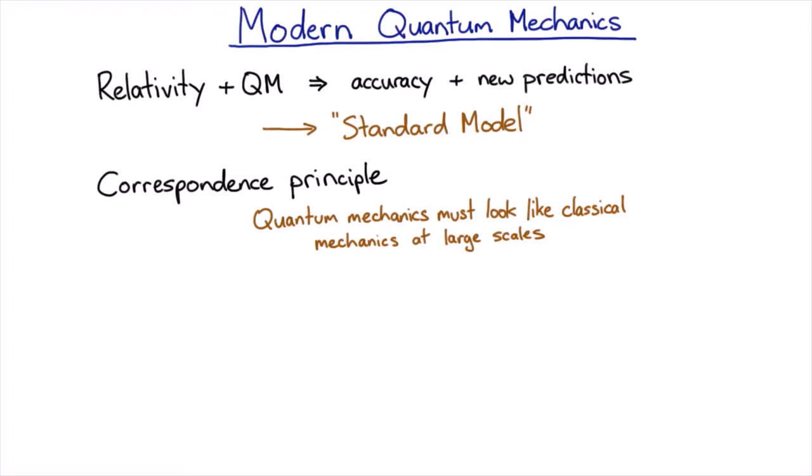And thus far quantum mechanics has always worked. And so we've tried to resolve this conundrum of having two different pictures for small things and big things by trying to see how the description for small things can extend to the big things and look like the world that we're used to.